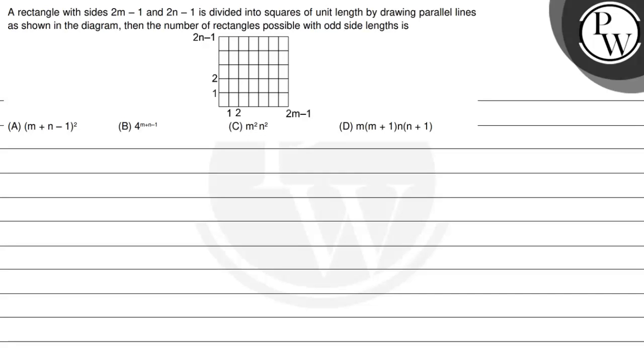Hello, Gacho. Let's read this question. The question says, a rectangle with sides 2m minus 1 and 2n minus 1 is divided into unit squares of unit length by drawing parallel lines as shown in the diagram. Then the number of rectangles possible with odd side lengths is.